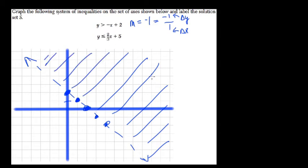The other region, y is less than or equal to 2 thirds x plus 5. Well, again, plus 5, 2, 3, 4, 5. Here's your y-intercept.